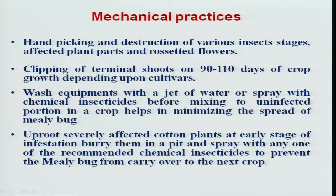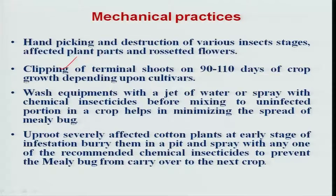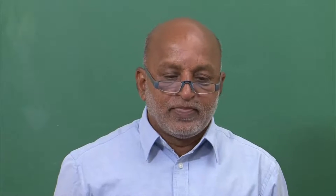Mechanical practices are also important. Developed larvae can be hand picked and destroyed, and affected plant parts can be collected and destroyed. In cotton, if you follow clipping of terminal shoots at 90 days, it will significantly reduce the population of bollworms and sucking pests, while also helping agronomically with boll development.